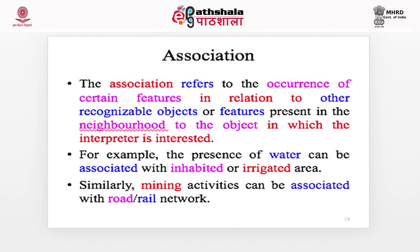Association refers to the occurrence of certain features in relation to other recognizable objects or features present in the neighborhood of the particular object or feature in which the interpreter is interested. For example, the presence of water can be associated with inhabited or irrigated areas. Similarly, mining activities can be associated with road or rail networks.